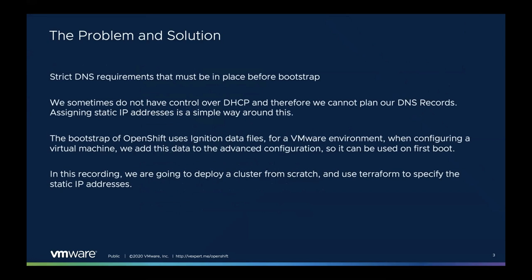So the problem we're trying to achieve. OpenShift 4.4 and earlier has strict DNS requirements that must be in place before you build the OpenShift Kubernetes cluster, before you bootstrap the Kubernetes environment. At some customer sites and even in lab environments, we don't always have control over DHCP, so therefore it makes it very hard for us to plan our DNS records before we bring up our OpenShift nodes. The easiest way to do this is to bring up those nodes with static IP addresses, which means we can plan our DNS records up front.